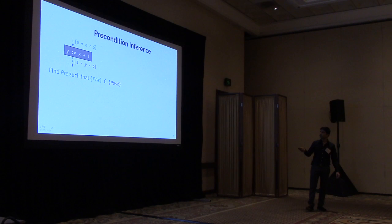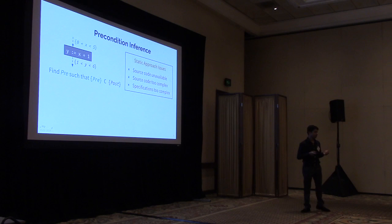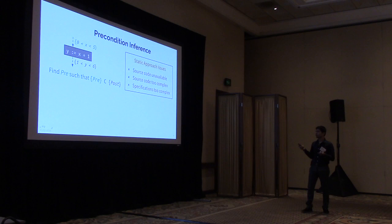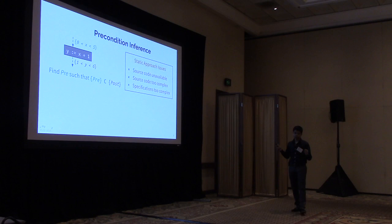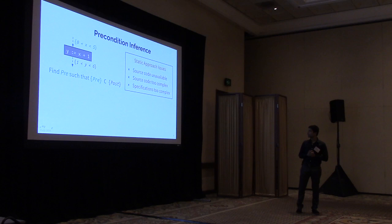How do we do this? There are many ways of doing this. Static approaches like weakest precondition computation have some shortcomings: they need the source code to compute the precondition, and if the source code is unavailable, they cannot give you any precondition. Even if source code is available, it needs to be simple enough — for example, if you have loops, WP cannot find a weak precondition unless you give an invariant. Also, the specification must be simple enough for an automated theorem prover to reason about.